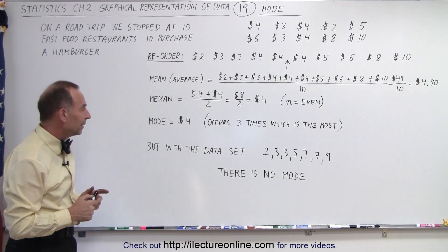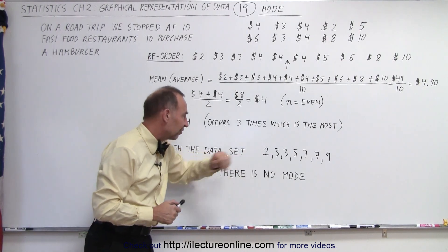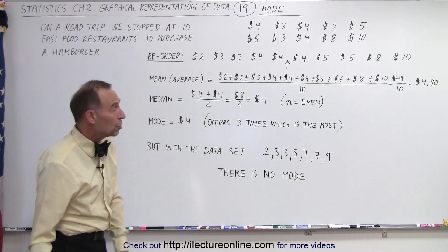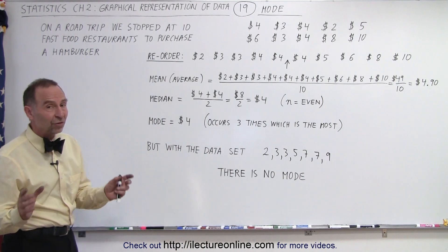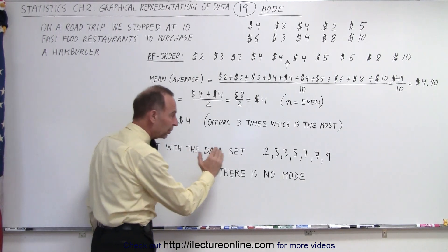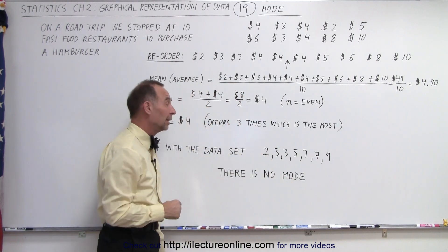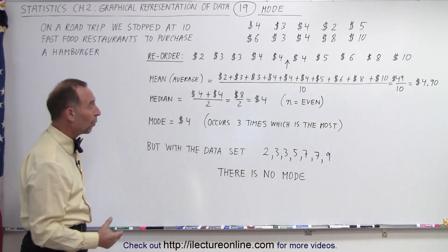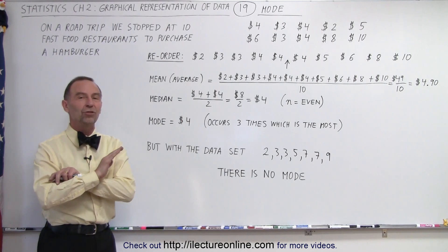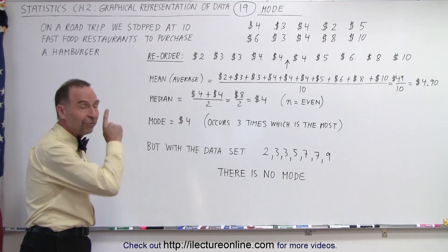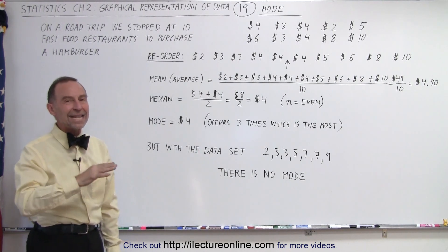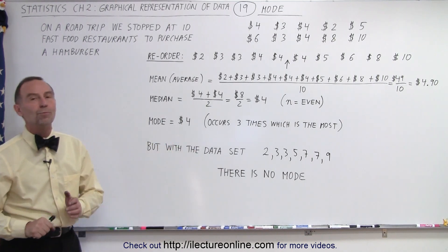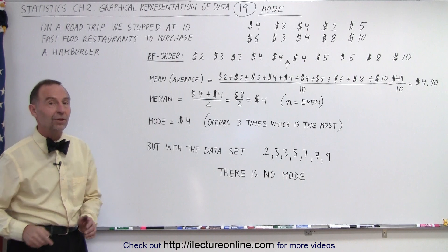Now what if the data set looks like this? For example, notice that the number three occurs twice and the number seven occurs twice, and they're asking you to find the mode of that data set. Now since there's no one winner, there's no one particular value that occurs more than any other value. Even though three occurs twice—more than two, five, and nine—there's another value, the value of seven, that also occurs twice. In that case, you simply state there is no mode. In order to have a mode, one value must occur more times than any other value, and if it doesn't, there's no such thing as a mode. In this data set, there is no mode, and that's the requirement when we're dealing with statistics.